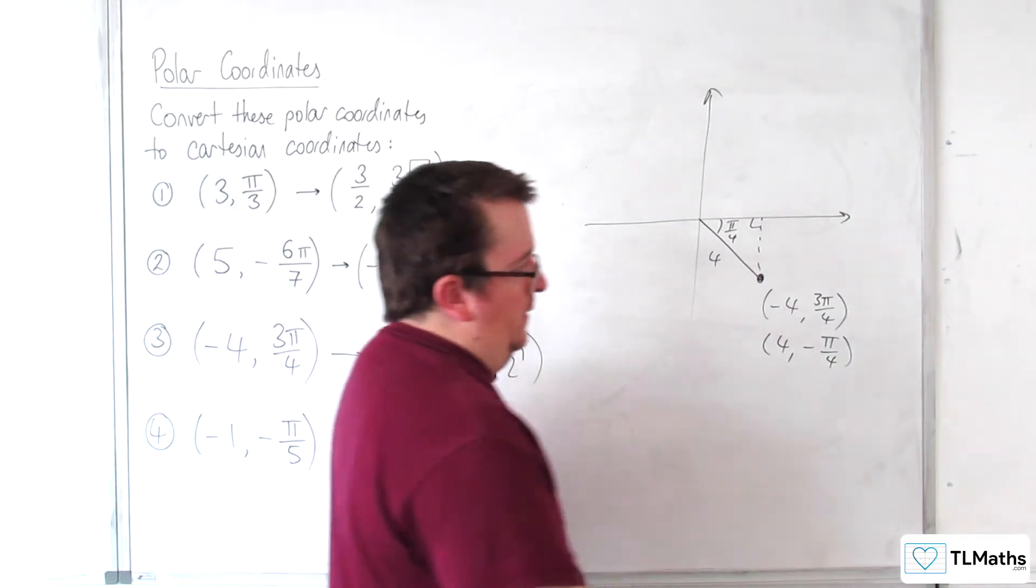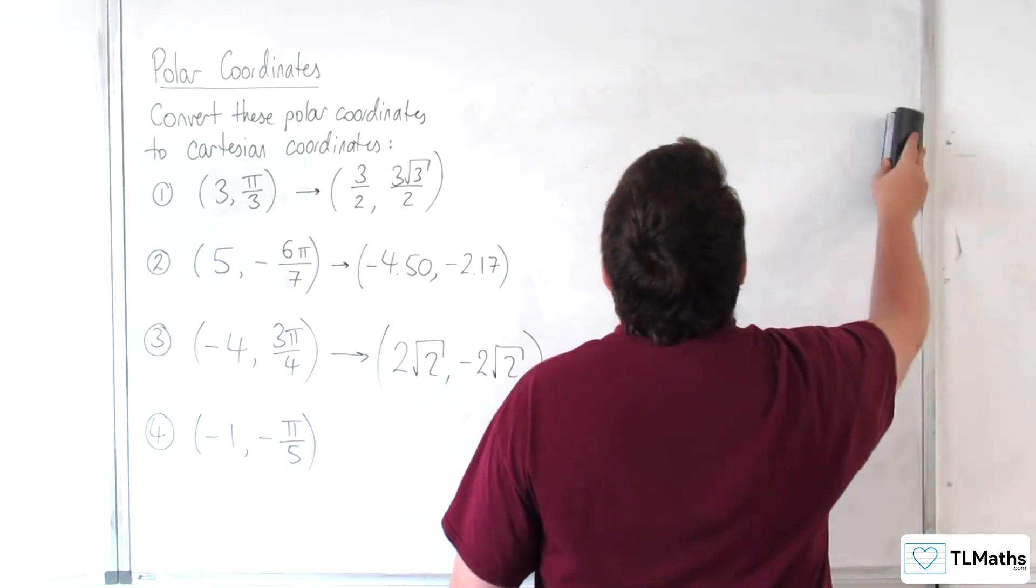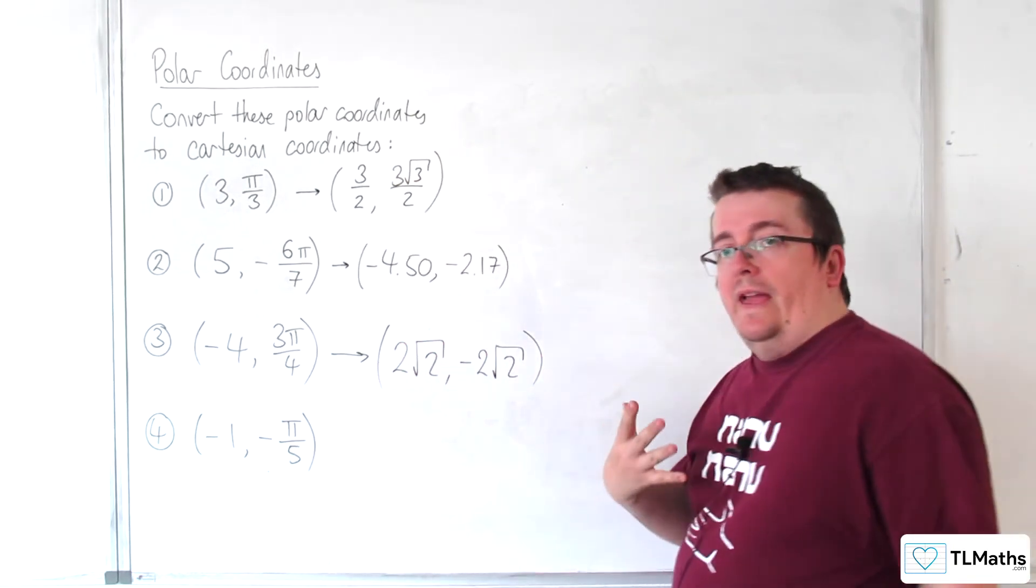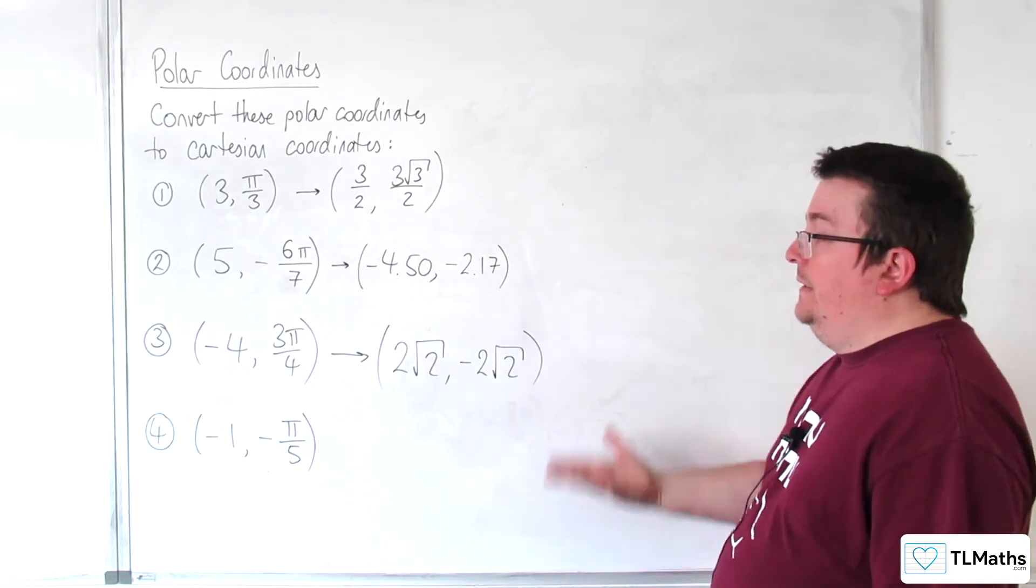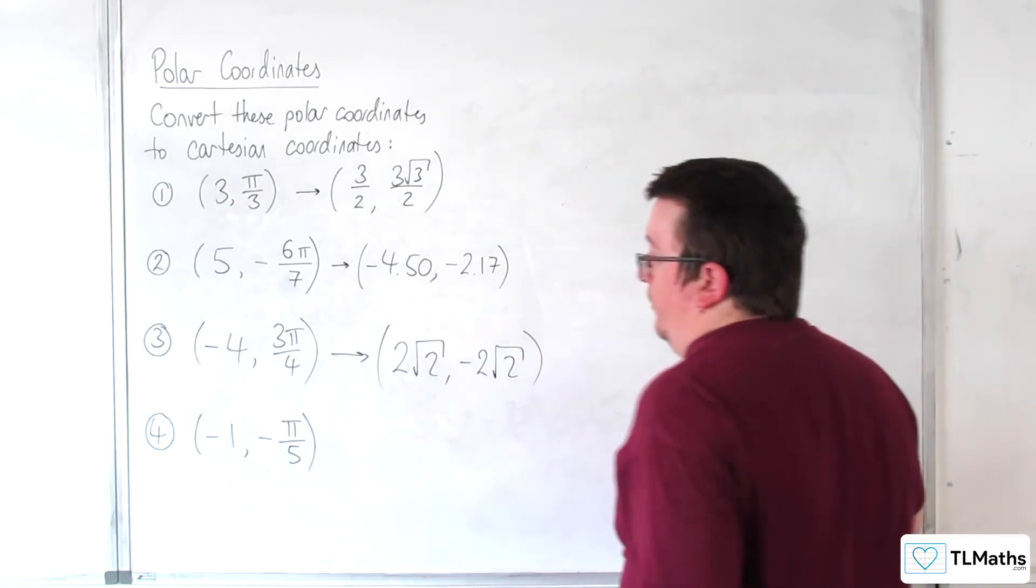Okay. So, there's more than one way of doing this. You can either use your diagram, or you can use the fact that we're remembering that x is equal to r cosine theta and y is equal to r sine theta. So, let's just check on number 4.